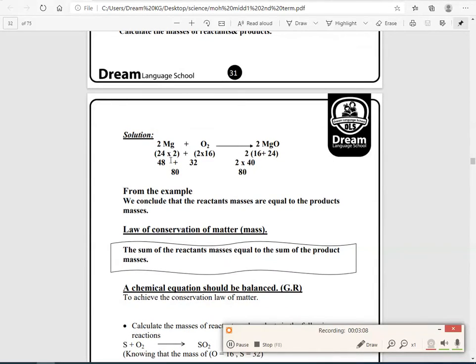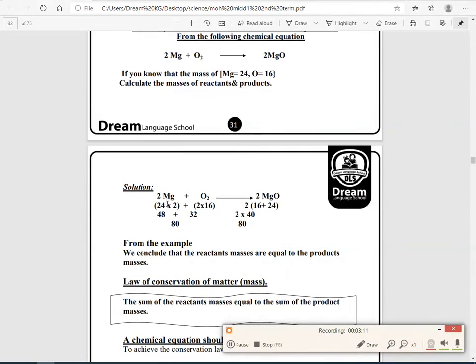First, we will write a number below each symbol: for 2Mg, 24 times 2; O2, 2 times 16; 2MgO means that the 2 is for the Mg and O. So, to open bracket, 16 plus 24. If we will make the first one, 48 plus 32 will be 80g, and in the product, we will find also 2 times 40 equals 80g.